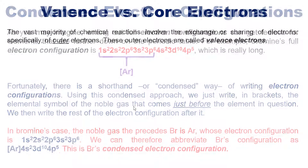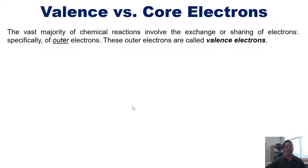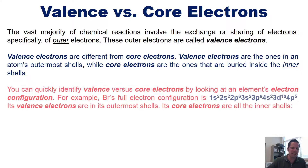Now we move to valence versus core electrons. The vast majority of chemical reactions in general chemistry involve the exchange or sharing of outer electrons. These outer electrons are called valence electrons. Valence electrons are in the atom's outermost shell, while core electrons are buried inside the inner shells.